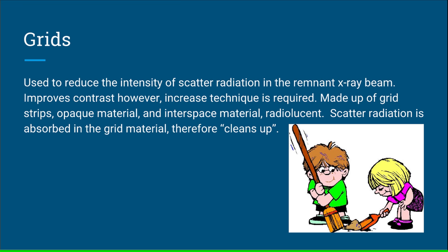Grids are used to reduce the intensity of scatter radiation in the remnant x-ray beam. They improve contrast; however, increased technique is required. Grids are made up of strips of opaque material and interspace material, which is radiolucent. Scattered radiation is absorbed in the grid material, therefore it cleans the image up.